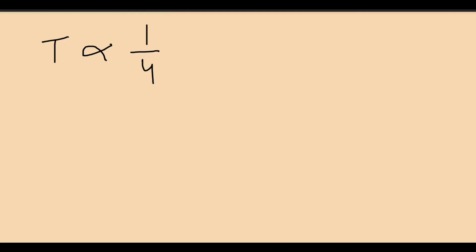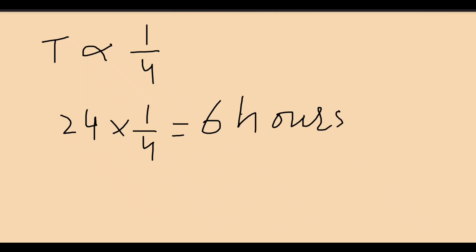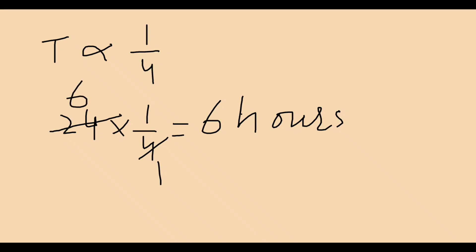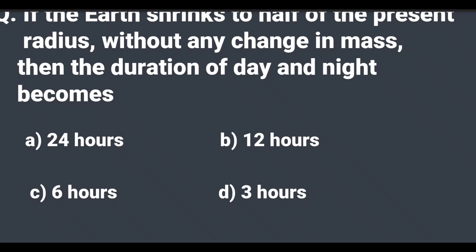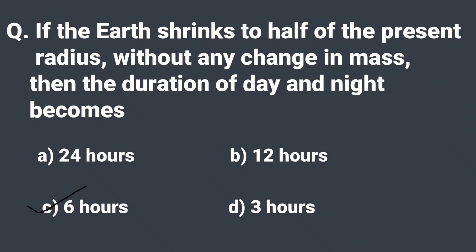As the daily rotation of Earth is 24 hours, by multiplying 24 hours with 1/4 we get the answer as 6 hours. 24 divided by 4 equals 6. So if the Earth shrinks to half of the present radius without any change in mass, then the duration of day and night becomes 6 hours. The correct option is (c).